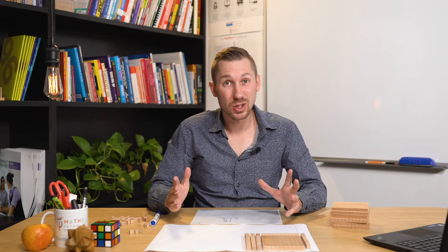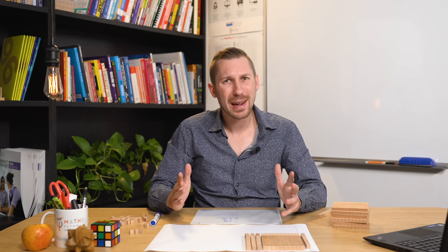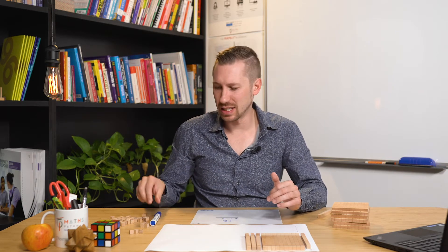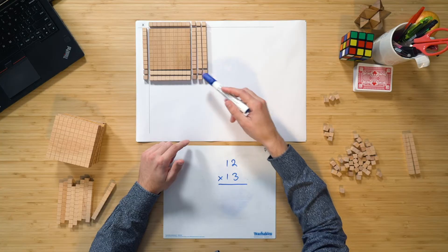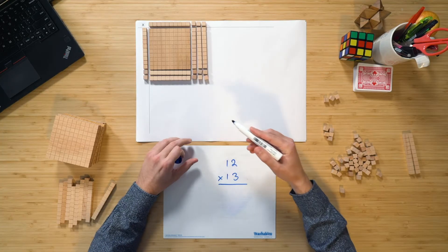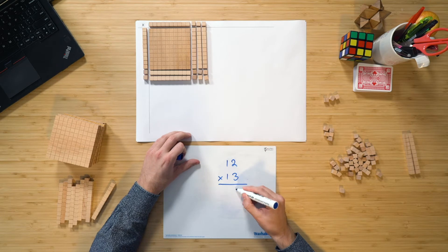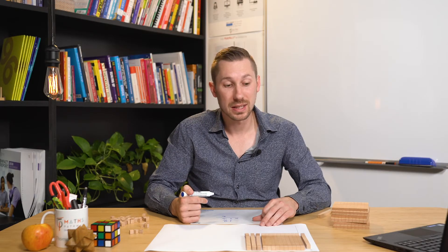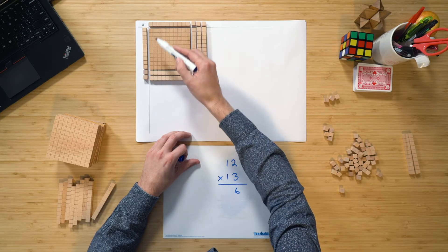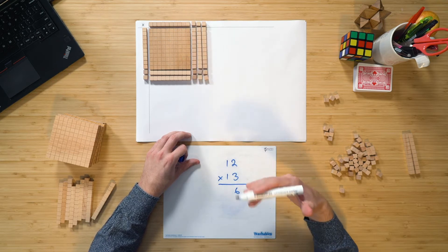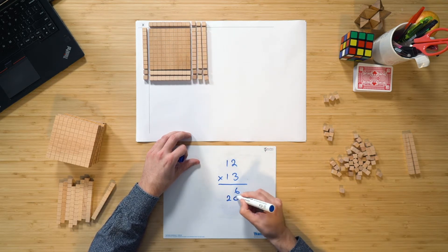Now, to get it to make sense to your students when looking at the algorithm, I recommend that you start off with the smallest pieces first. That is the 3 times the 2. So we know that 2 times 3 will give us 6. So then we look at the next largest pieces. That is, we have 2 multiplied by the 10, which of course is going to give us 2 10s, or 20.